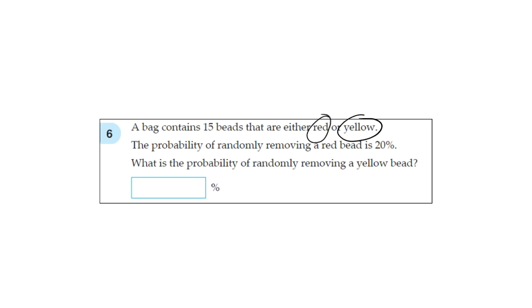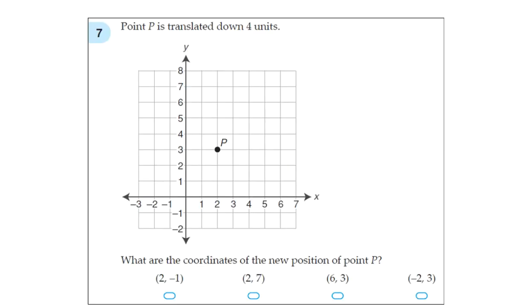So there's only 2 options, remember. The probability of randomly removing a red bead is 20%. What is the probability of randomly removing a yellow bead? Since there are only 2 options, the entire probability has to add up to 100%. 20% is for the red bead, so we take that away. What's 100 minus 20? It is 80.